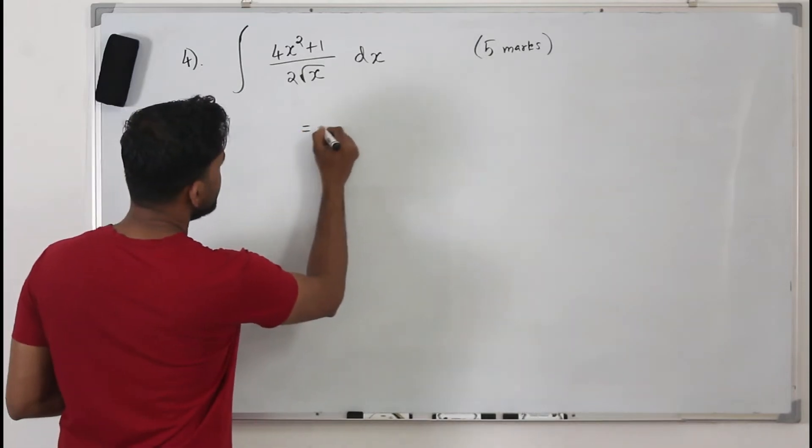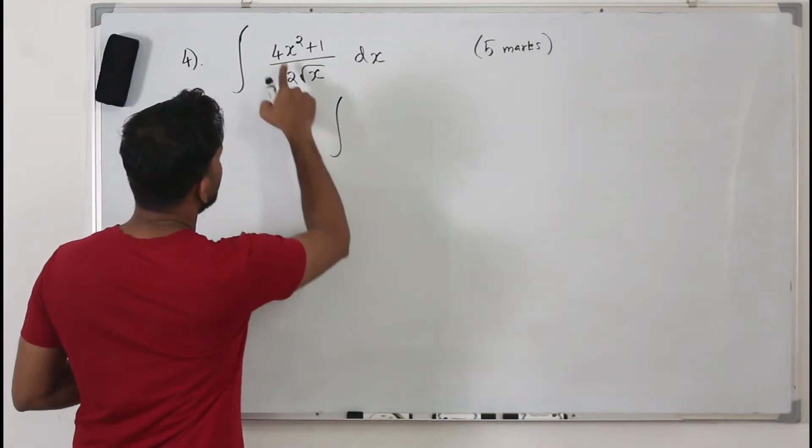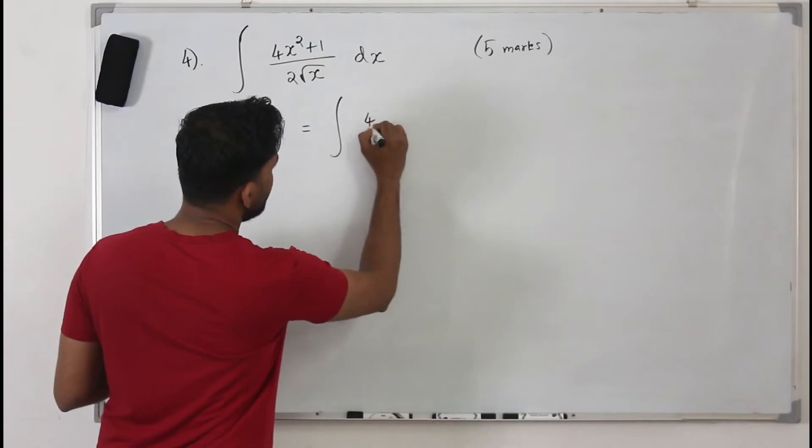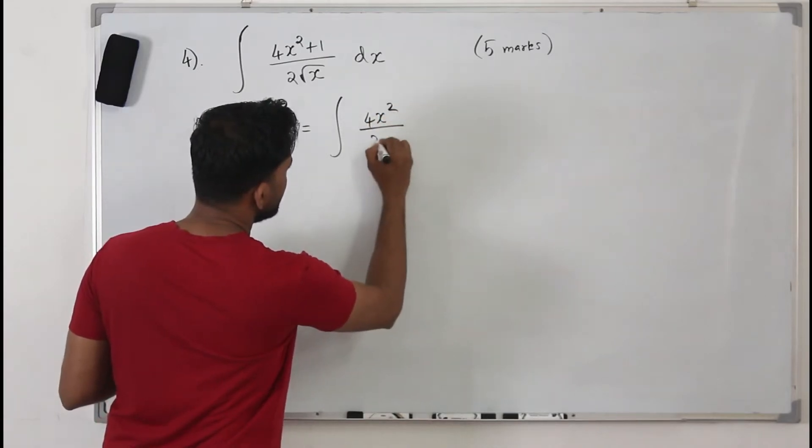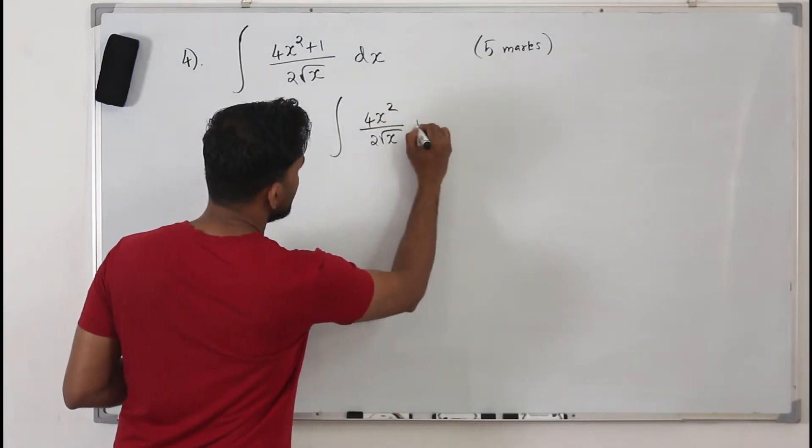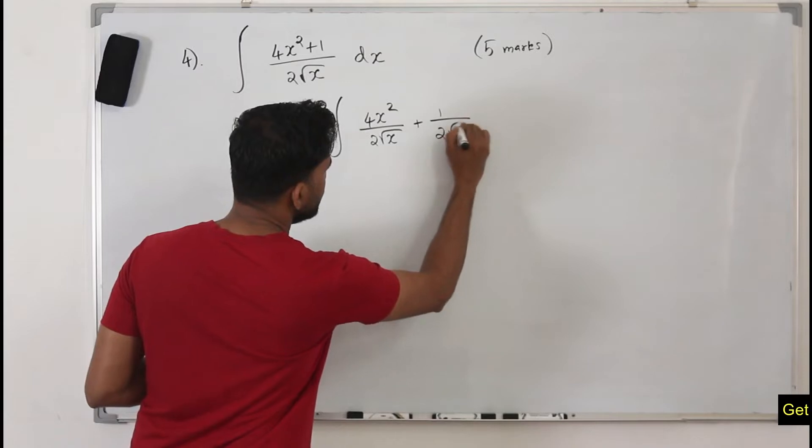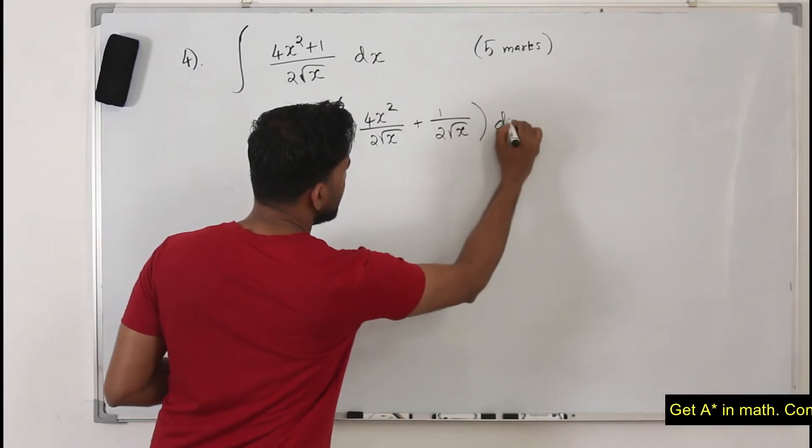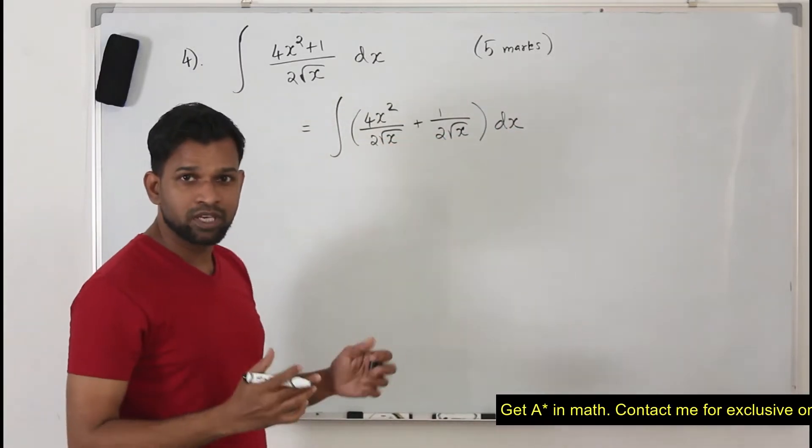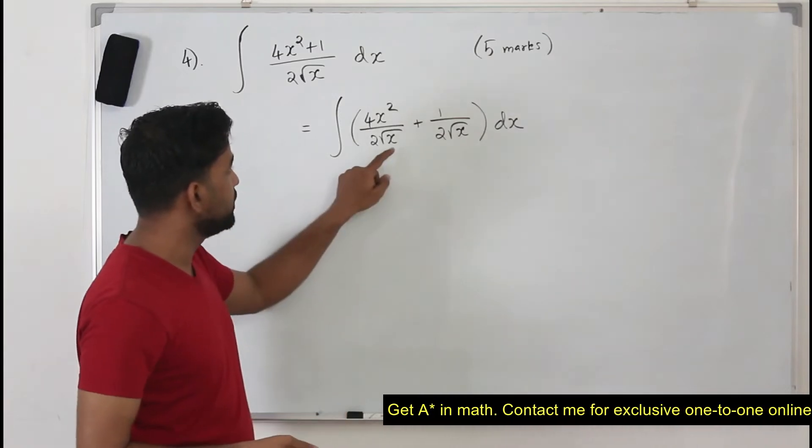So if we rewrite this integral, you divide each term by 2 root x. It will become 4x square upon 2 root of x plus 1 upon 2 root of x dx. So you split them separately and apply the laws of indices.